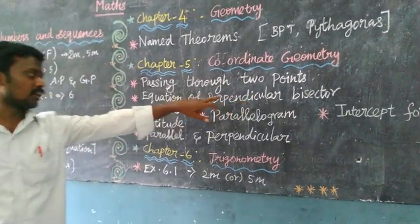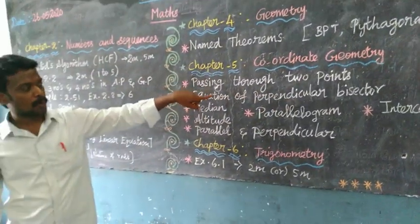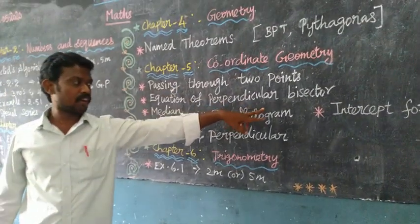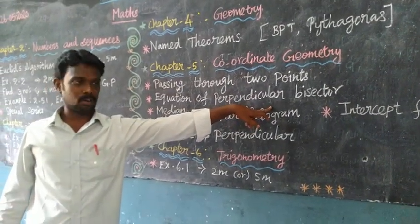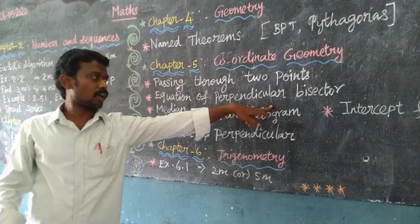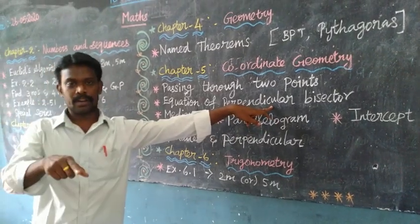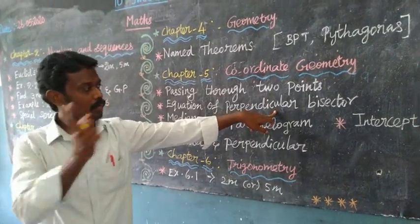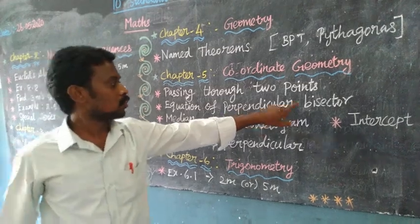Passing through two points, perpendicular bisector - the question is very easy. This is an important question.